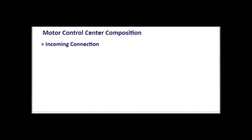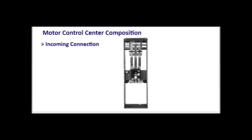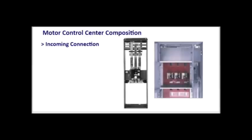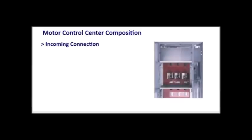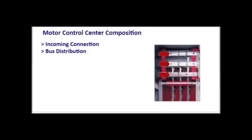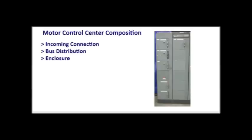Let's examine how a motor control center is composed. The incoming section is where the distribution power is connected — it can be a main circuit breaker or main lugs only. From there, power gets distributed by an internal bus system. The ground bus, main horizontal bus, and vertical bus make up the system; the horizontal bus is sized depending on the load connected. The bus is housed in an enclosure available in different environmental ratings as designated by NEMA and IEC, which we will go over in more detail later.